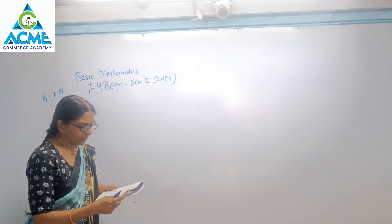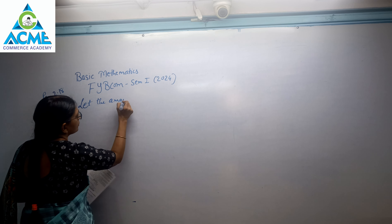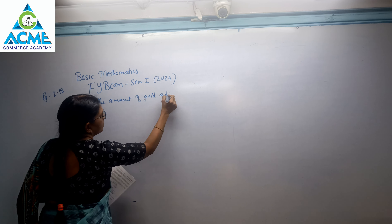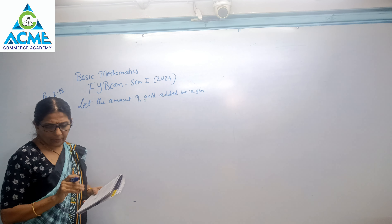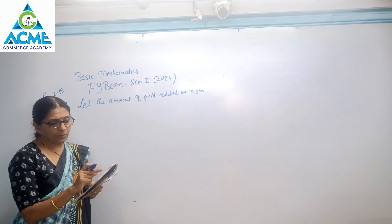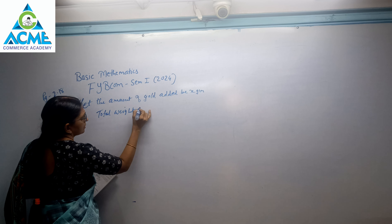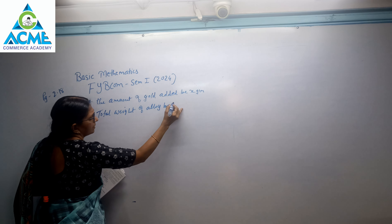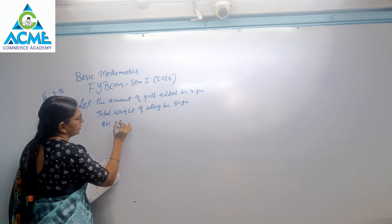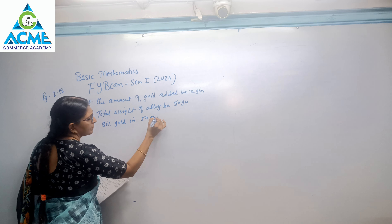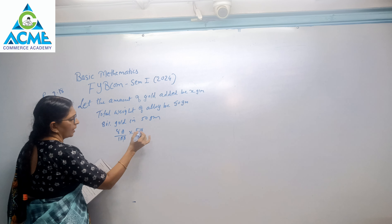Let's start the sum. Let the amount of gold added be x grams. Now, in the question, we have 80% gold in the 50 grams of alloy. So total weight of alloy is 50 grams. How much is 80% gold? 80% of 50 grams = 80/100 × 50. After cancellation, we get 40 grams.